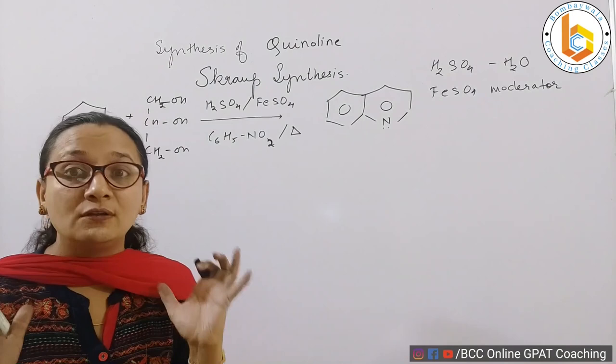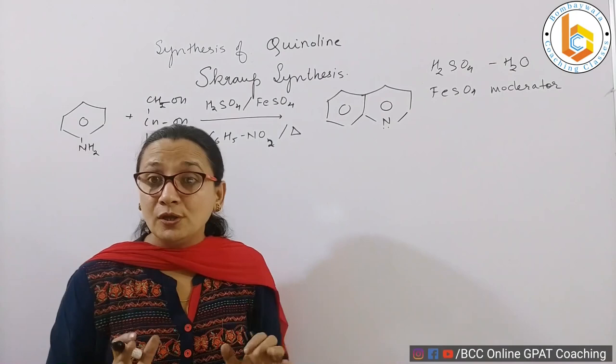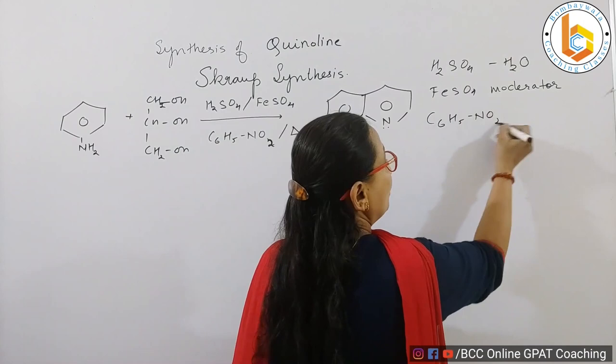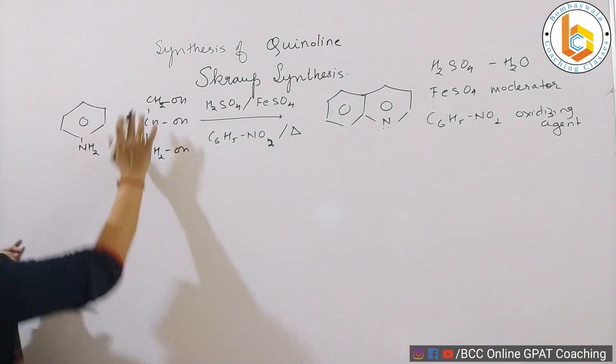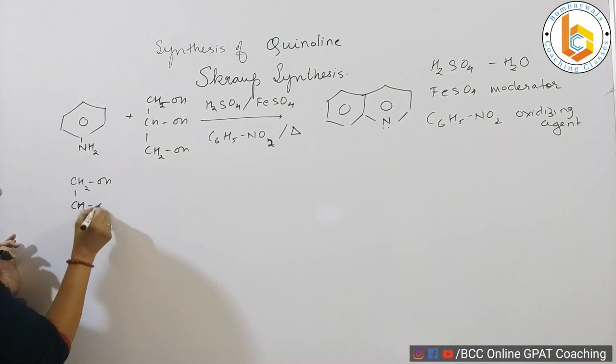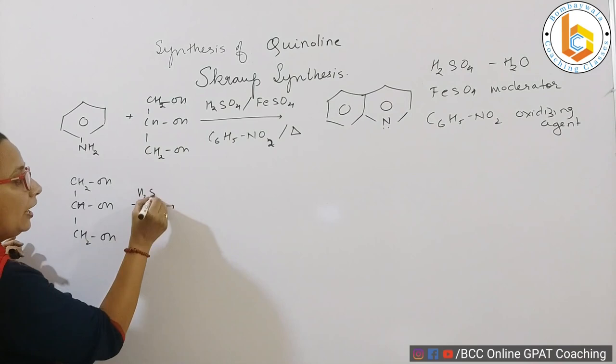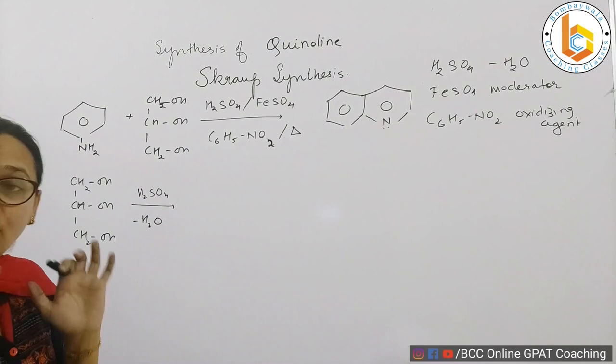Then we are going to also use nitrobenzene, and this nitrobenzene C6H5NO2 is going to act as an oxidizing agent. Now let us see how these reagents work in Skraup synthesis. First of all, we are taking our glycerol.